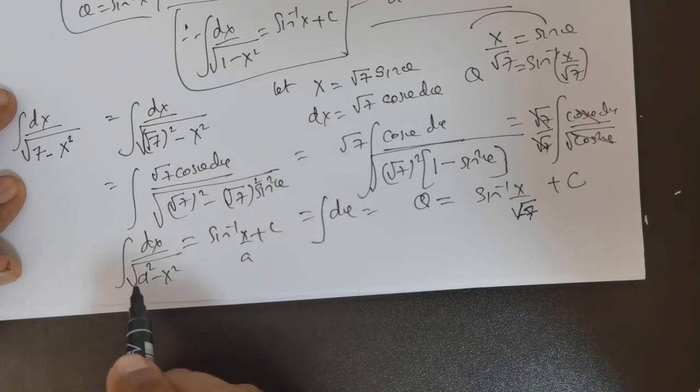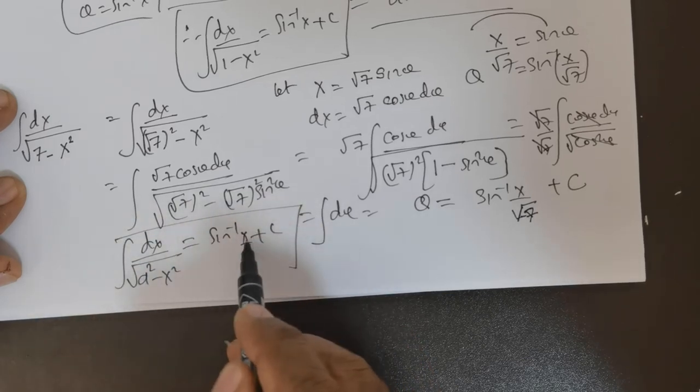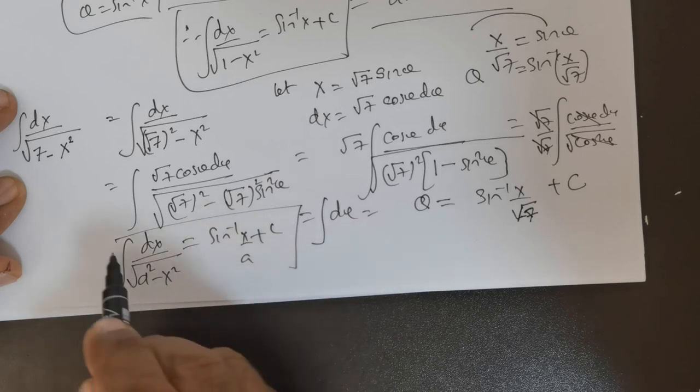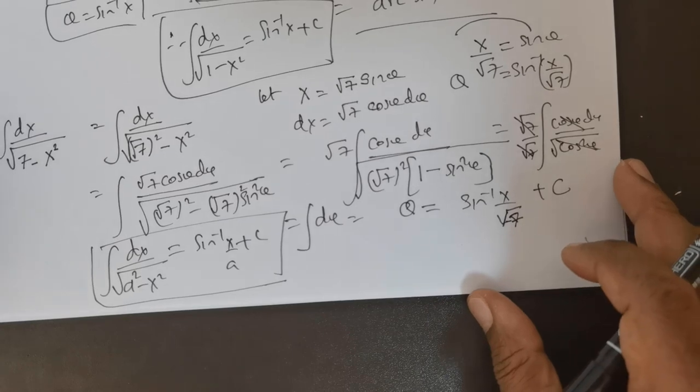The integral of dx over the square root of a squared minus x squared is equal to sin inverse of x over a plus an arbitrary constant. So any constant that you see, if you can represent it in this fashion, the formula would be sin inverse of x over that constant. This is a very important result, and we have successfully completed this question.